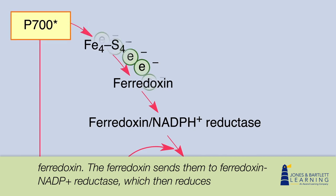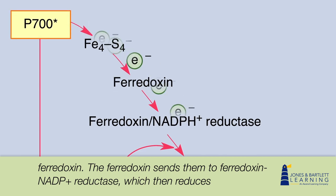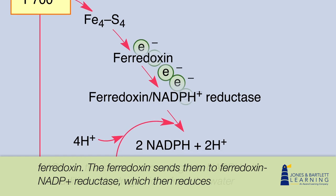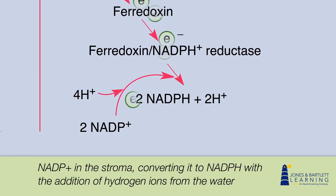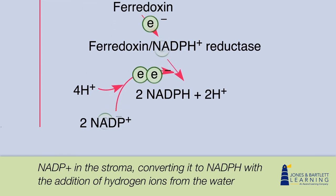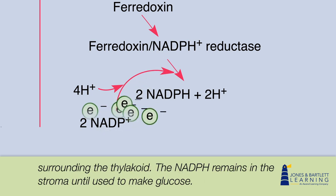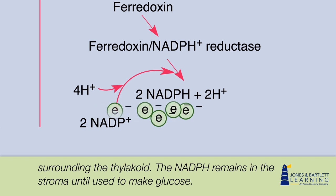The ferredoxin sends them to ferredoxin NADP+ reductase, which then reduces NADP+ in the stroma, converting it to NADPH with the addition of hydrogen ions from the water surrounding the thylakoid. The NADPH remains in the stroma until used to make glucose.